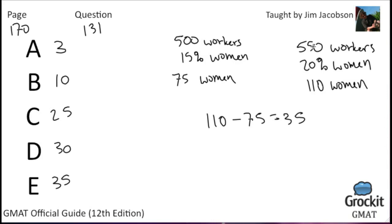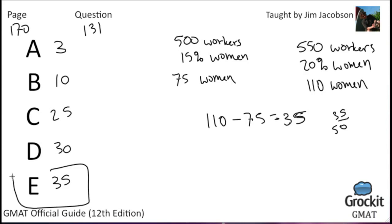110 minus 75 equals 35. So 35 of the new 50 workers need to be women to raise the percentage to 20%. They could also have asked what percent of the new 50 workers need to be women — that would be 35 out of 50 — but that's not what the question asked. 35 is the actual number of women that would need to be added.